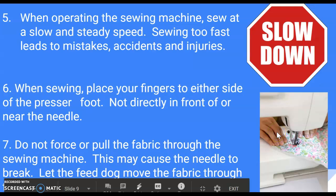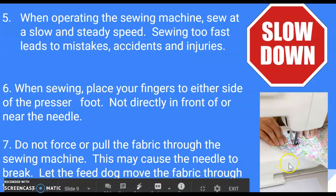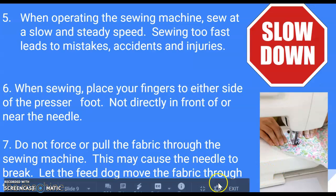When operating the sewing machine, we're going to sew at a slow, steady speed so that we can reduce mistakes, accidents, and injuries. We also want to sew with our fingers on either side of the presser foot, not directly in front of the needle, as you can see in this picture. And we're going to let the feed dogs do their job, meaning that we don't want to force the fabric through the machine, which can cause the needle to break.